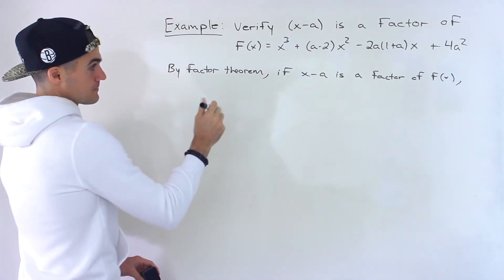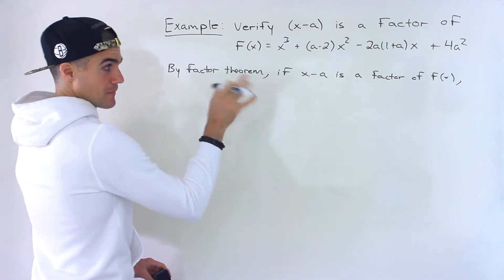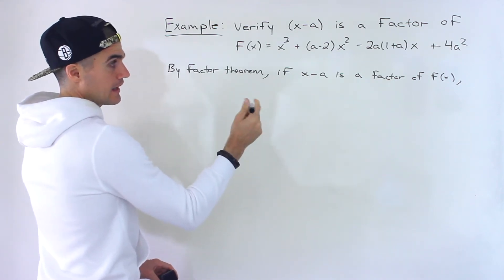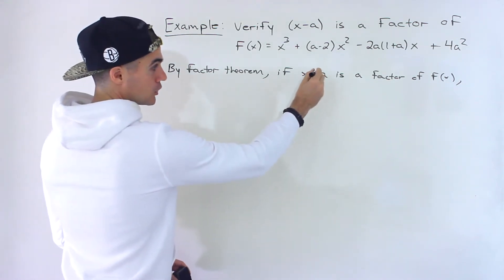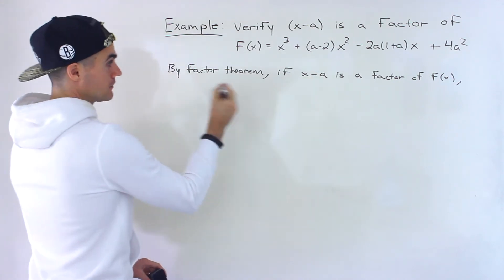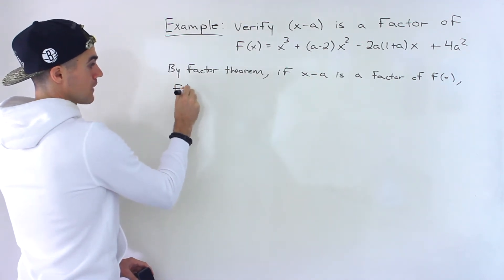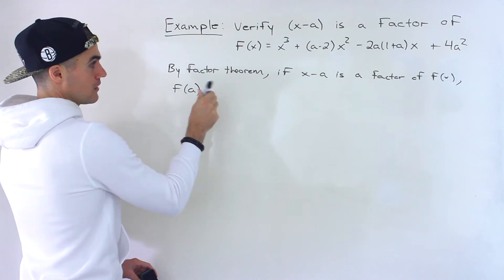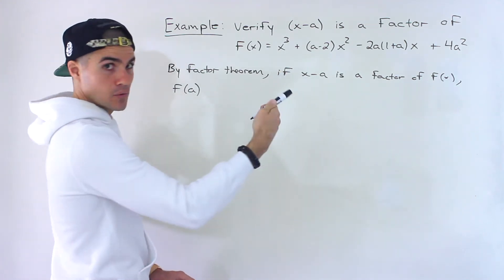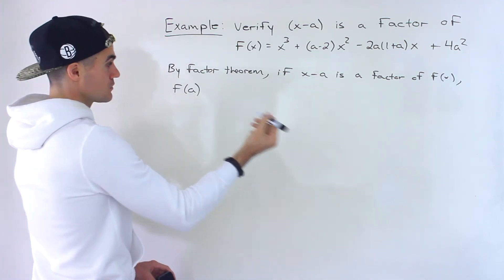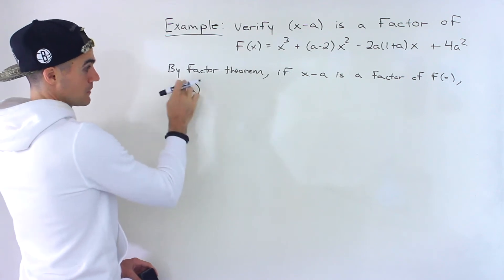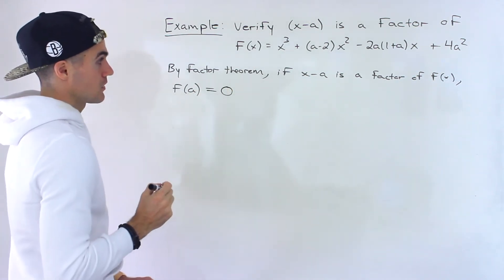Which means that by the remainder theorem, we can get, if we're dividing a polynomial by x minus a, the remainder is going to be f of a, right? But if x minus a is a factor, then we know that the remainder is equal to zero, which means f of a, which is the remainder, is going to equal zero.